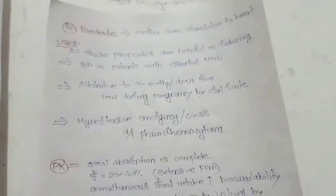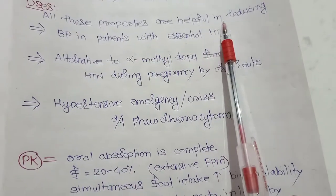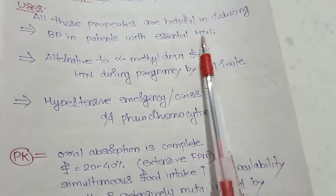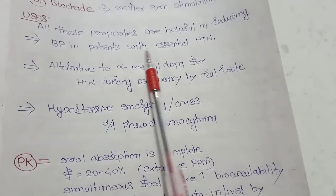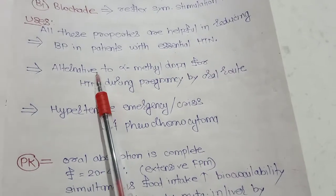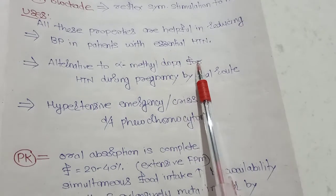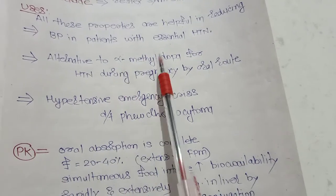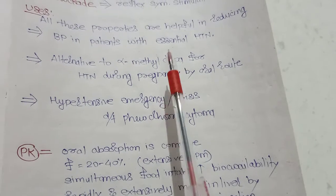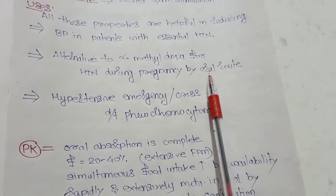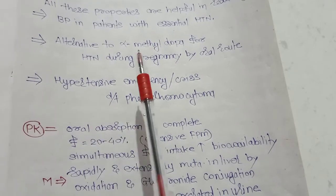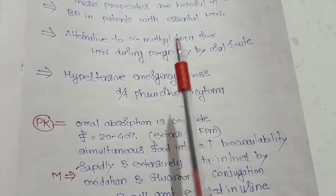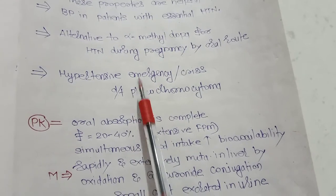Labetalol is used to reduce blood pressure in patients with essential hypertension or chronic essential hypertension. It can also be given as an alternative to alpha-methyldopa for hypertension during pregnancy by the oral route. Additionally, it is used in severe hypertension, hypertensive emergency, or hypertensive crisis due to pheochromocytoma, as an alternative to phentolamine or phenoxybenzamine.